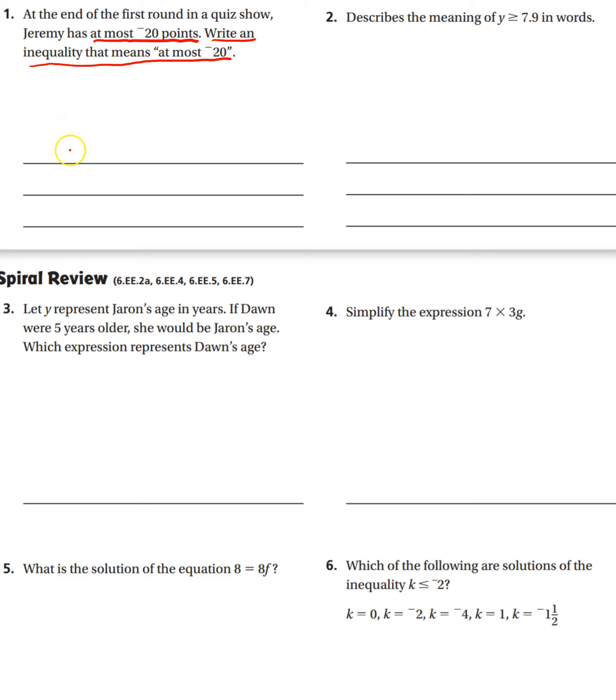So for Jeremy, we'll just use J. Jeremy has at most, so Jeremy can have less than or equal to negative 20, because that's the most he can have. He can't have more than negative 20.